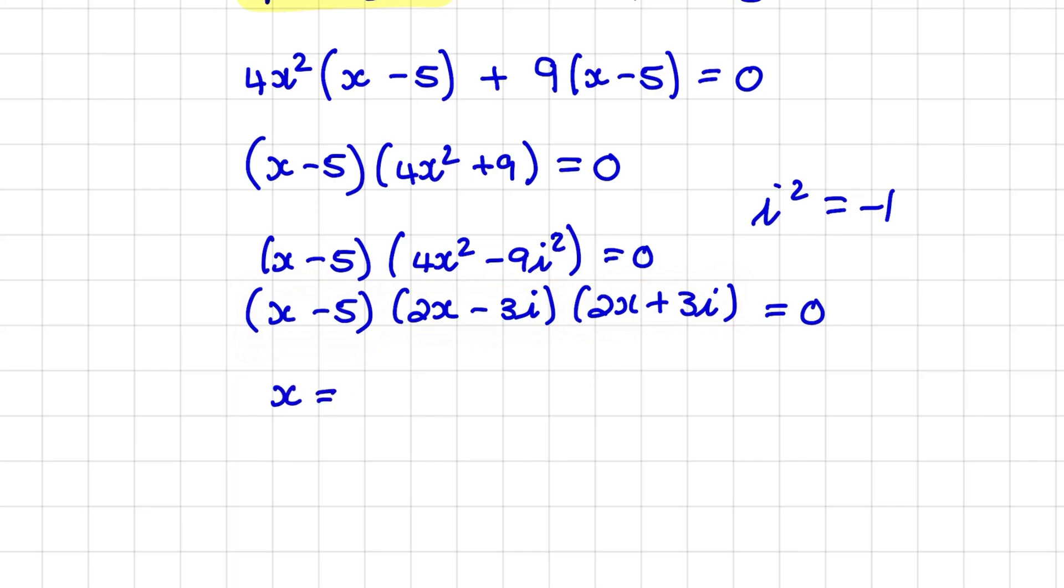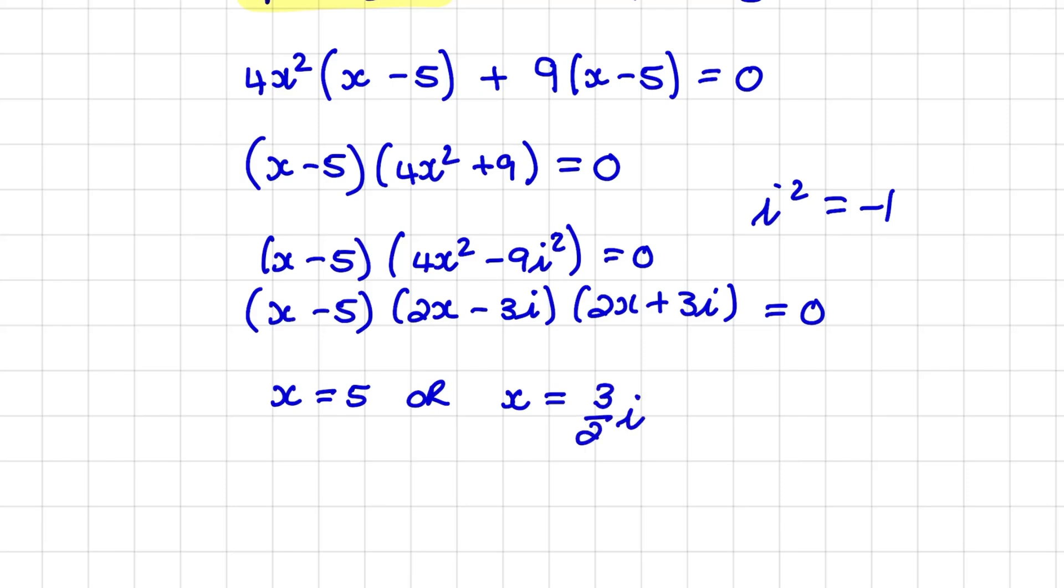That means that x is equals to 5. Or I can say that 2x minus 3i equal to 0. And if I solve that I have x equals to 3 over 2i. And for my last set of brackets I have 2x plus 3i equal to 0. That means that x can also be equal to negative 3 over 2i.